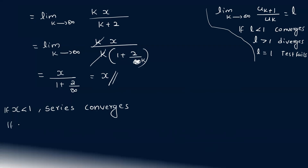If x is less than 1, the series converges. If x is greater than 1, the series diverges. This is the ratio test result.